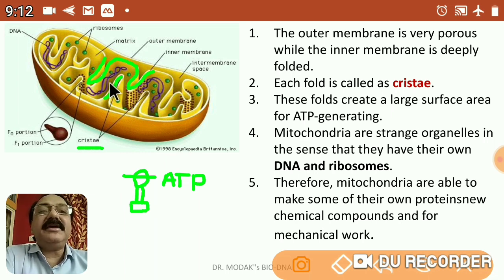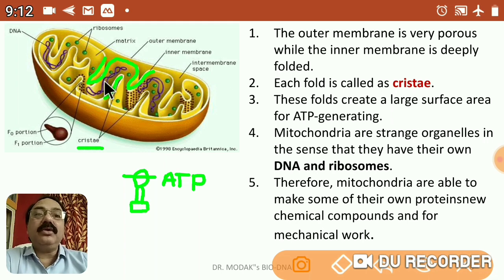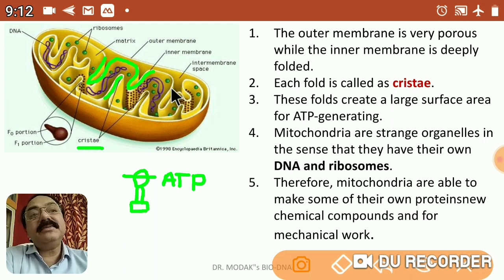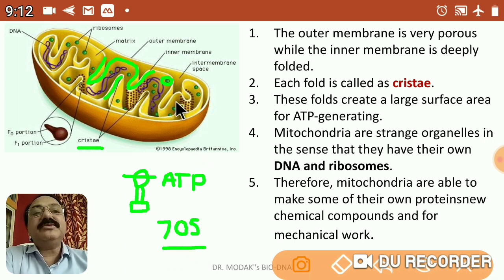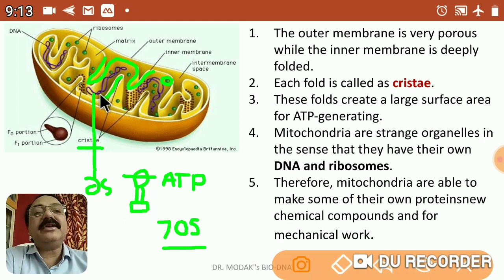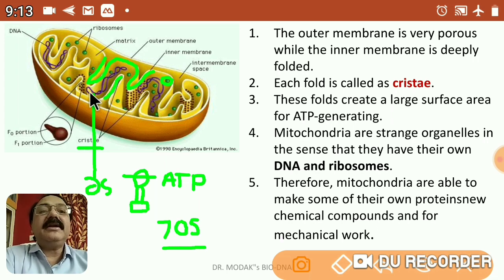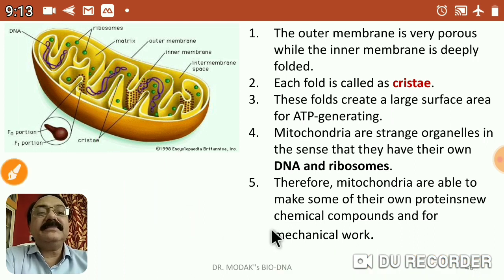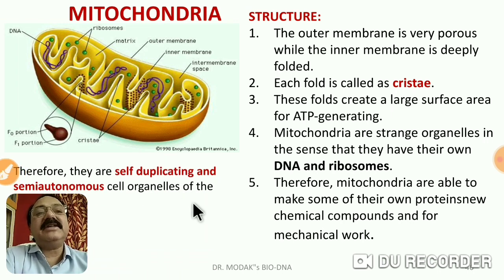Inner to the inner membrane is a space called the inner space, filled with matrix. Matrix is a colorless colloidal fluid containing lipids and certain proteins. It also contains 70S type ribosomes — the same type present in prokaryotic cells. Similarly, the mitochondrion also contains a double-stranded circular DNA molecule. With these two materials — DNA and ribosomes — mitochondria can synthesize their own proteins and enzymes using some materials taken from the cytoplasm.